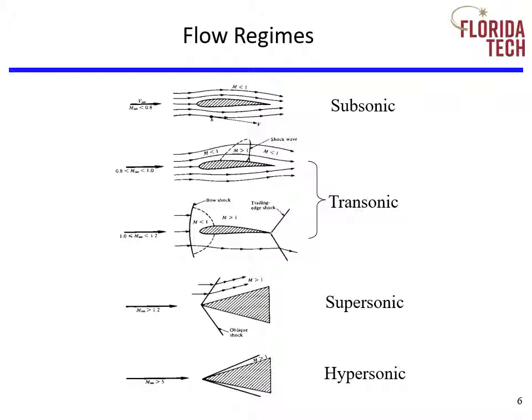Here's another diagram defining the flow regimes. This diagram highlights the fact that both subsonic and supersonic local flow exist in the transonic regime. Above Mach 1.2, the flow everywhere is supersonic.